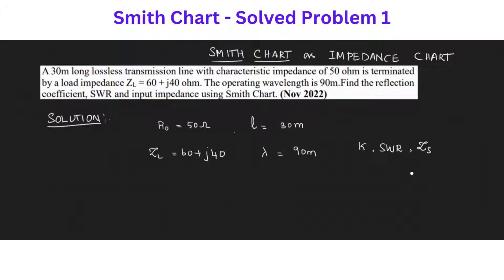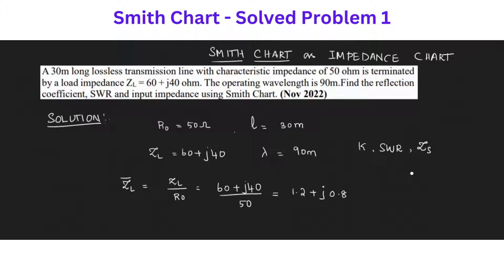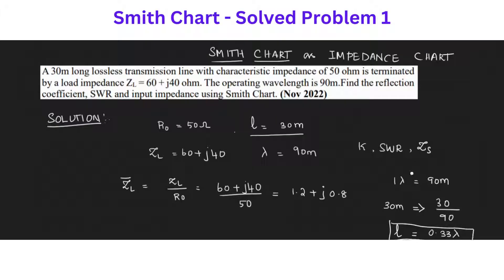First, we have to find the normalized load impedance ZL_bar, which equals ZL divided by R0, equal to 60 plus j40 divided by 50 ohms. This would be 1.2 plus j0.8. Now we have to plot this on the Smith chart. Before that, we have to represent the length of the transmission line in terms of lambda, because 1 lambda is 90 meters. Therefore, 30 meters will be represented as 30 divided by 90, which equals 0.33 lambda.